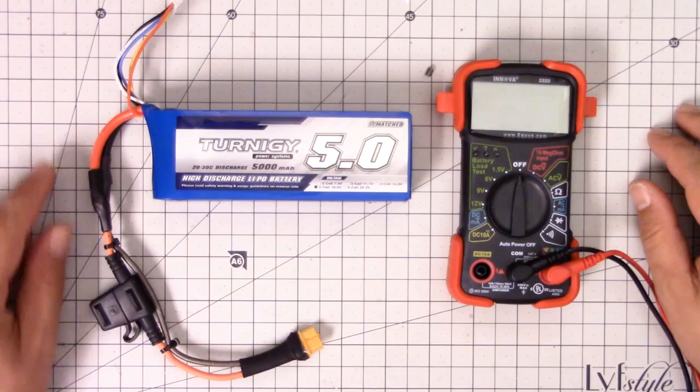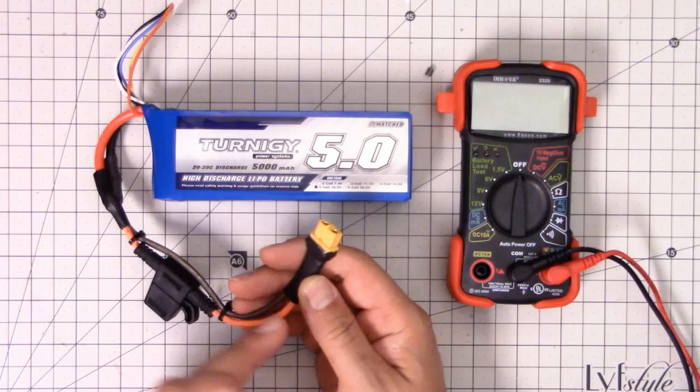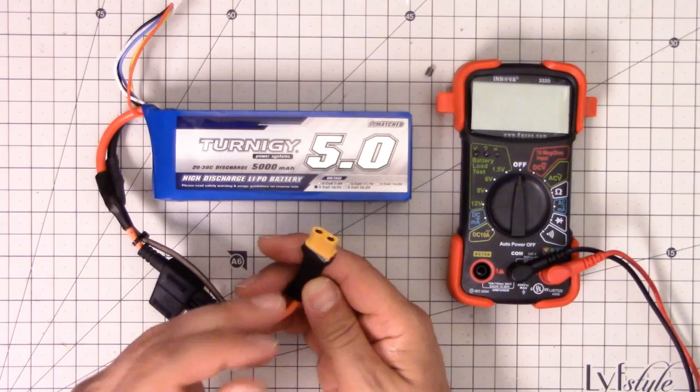In this video, we're gonna talk about polarity and checking the polarity of your connectors. Polarity means that the positive comes out where the positive goes, and the negative comes out where the negative goes. When you get those two things backwards, the smoke comes out.